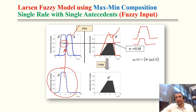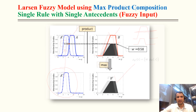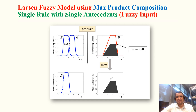In Mamdani, the whole area above the slice is considered, whereas in Larsen the shape is maintained but scaled down. If the left area is also considered, it becomes Mamdani. Since the area in Larsen is less, the defuzzified crisp value will also be less. We scale down to this level and the output is B-dash.